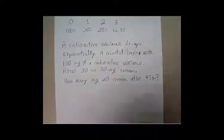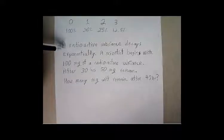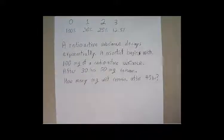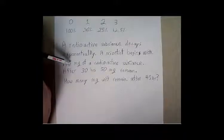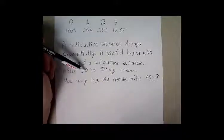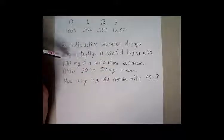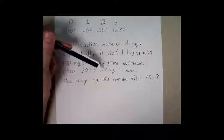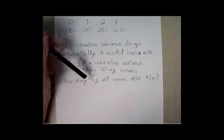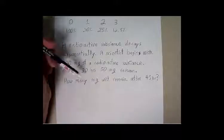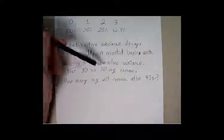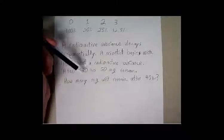So let's take a look at an example together. Radioactive substances decay exponentially, and we know what an exponential model looks like. A scientist begins with 100 milligrams of a radioactive substance. After 30 hours, 50 milligrams remains. You can see that 50 would be half of 100, so here we have a half-life of 30 hours — 50% or 50 milligrams remain after 30 hours.